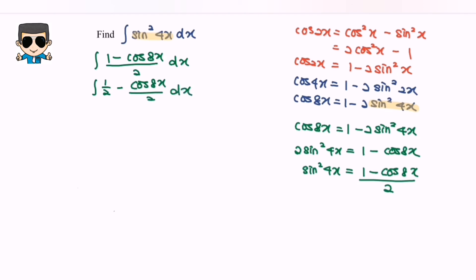So kindly refer to the basic rules. We have integrate 1 over 2, which is a constant, so our answer will be x over 2 minus, if we integrate the cos 8x we will have sine 8x over 8 multiplied with 2, plus c.